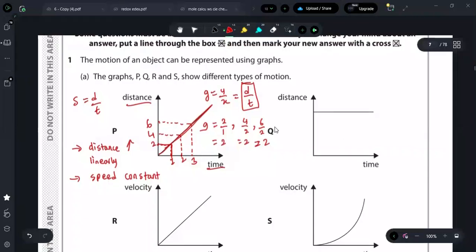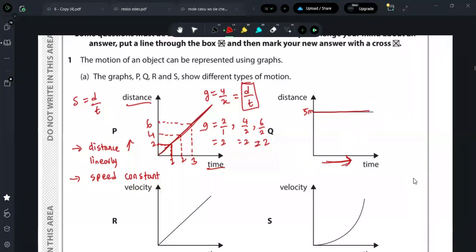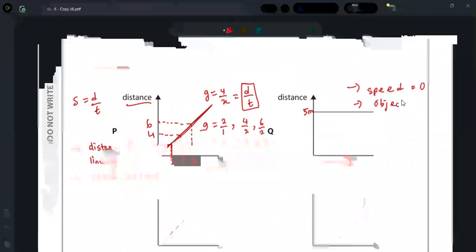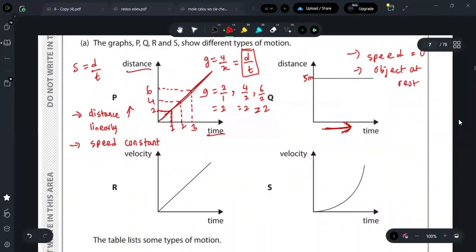Second, graph Q. Here, time increased but distance didn't increase. It is only 5 meters, then it is always 5 meters. So time is increasing but distance is not increasing, which actually shows no motion. It was not moving at all, because at every time it was at the same distance. It was not moving. So I can say speed equals zero, object at rest. Done.